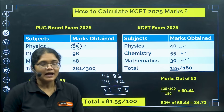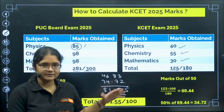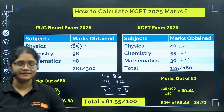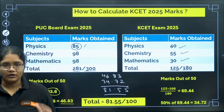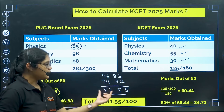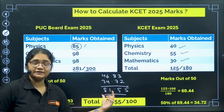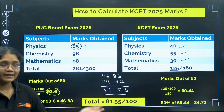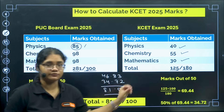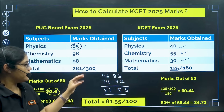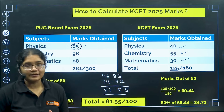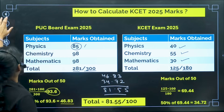I hope that part is clear. Now all of you can sit and calculate what total percentage you are getting after taking 50 percent from your PU board marks and 50 percent from your KSET marks. Based on this, the KSET rank can be determined. Now we'll go to the second part of this video — predicting your KSET rank.